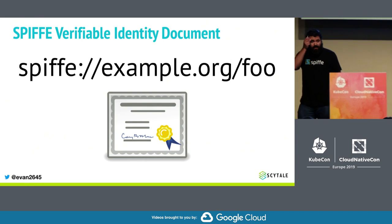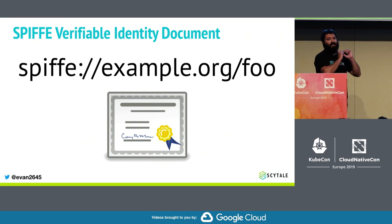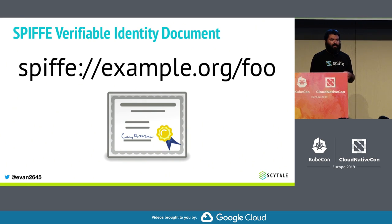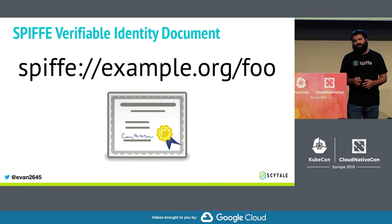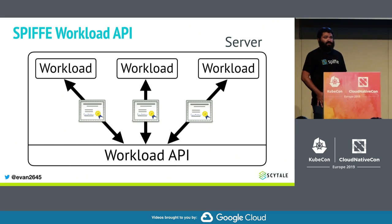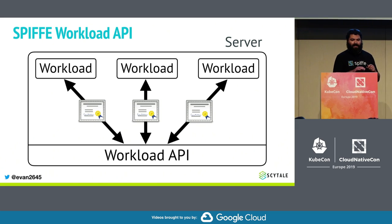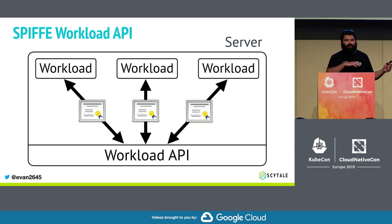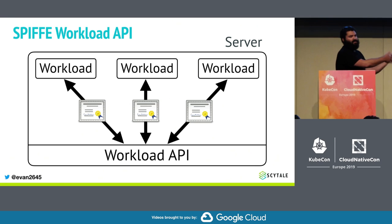The next concept is what we call an SVID — Spiffy Verifiable Identity Document. These are signed documents that you use to prove your identity to a remote system. We didn't want to reinvent the wheel, and we wanted this to work with currently deployed software. So we have two types of SVIDs defined currently: one based on X.509 certificates, and the other based on JWT. The third piece is what we call the Workload API, which answers the question of how do I get my identity.